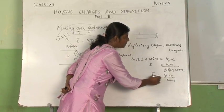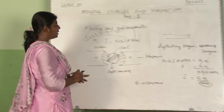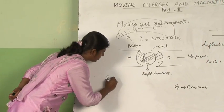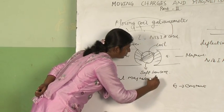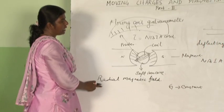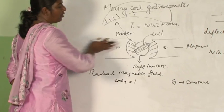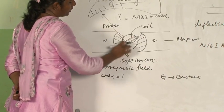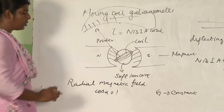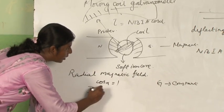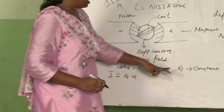Here the deflection is not directly proportional to I because of the cos alpha factor. For that reason we have kept a radial magnetic field. Due to this radial magnetic field, the cos alpha term becomes equal to 1, as the magnetic lines of force are parallel to the coil. Now your equation becomes I is equal to G alpha, where G is your galvanometer constant.